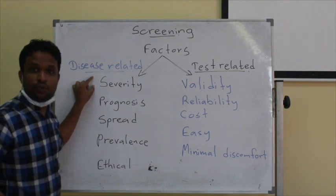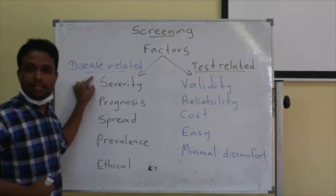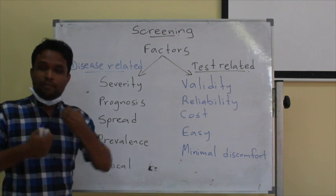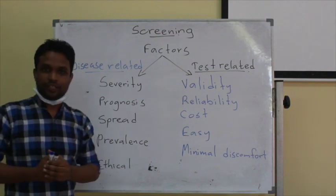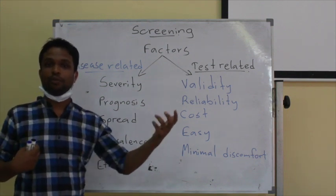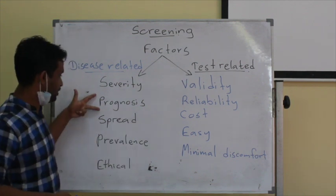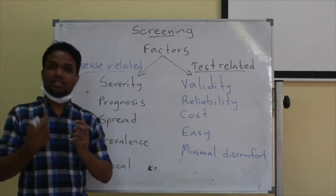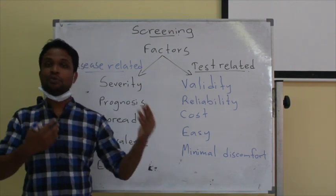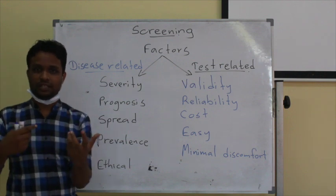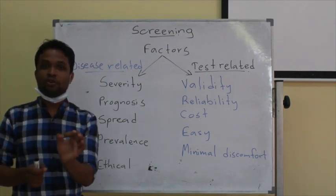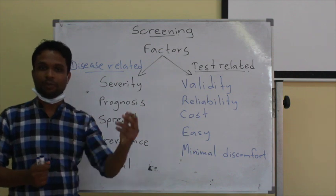Severity of a disease is one of the main considerations before applying a screening test. If a disease is severe, it will be important to identify it at an early phase — for example, cancer, where early identification leads to good prognosis. The second factor is prognosis: if a disease has good prognosis, early identification is valuable; if prognosis is bad, screening will not change the outcome.